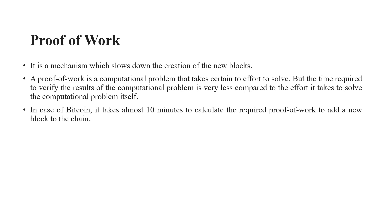Proof of work is a computational problem — how a nonce has to be generated and a hash produced for that block. For Bitcoin, it takes around 10 minutes to calculate the nonce to verify and validate a block. The participants in the network must come to an agreement to achieve consensus. Within 10 minutes a block must be uploaded; otherwise the transaction is cancelled. Many algorithms have been proposed, including proof of work and proof of stake, to achieve consensus among the miners.